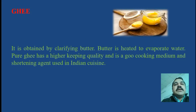Next is ghee. It is obtained by clarifying butter. Butter is heated to evaporate water. Pure ghee has a higher keeping quality and is a good cooking medium and shortening agent used in Indian cooking.